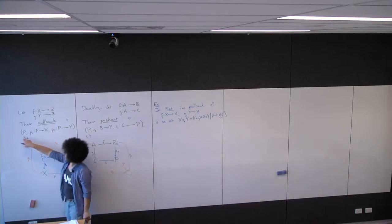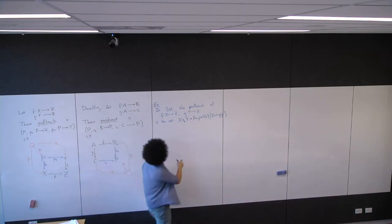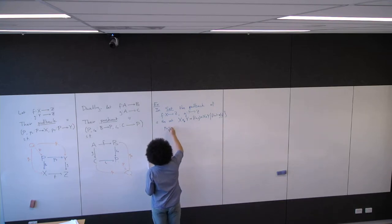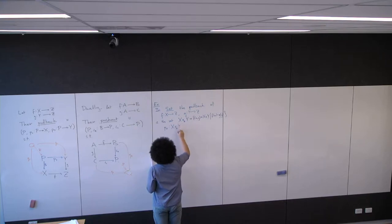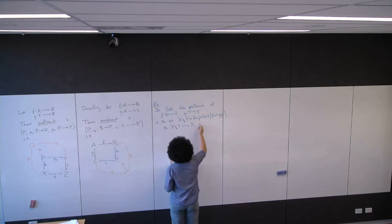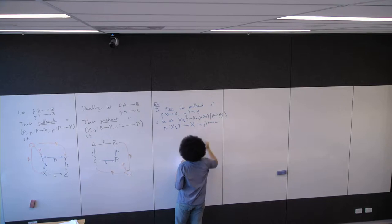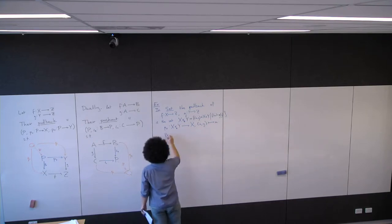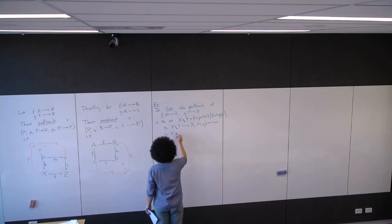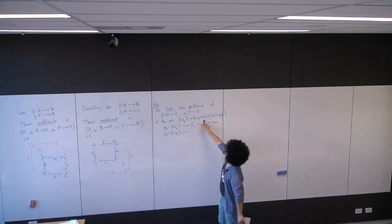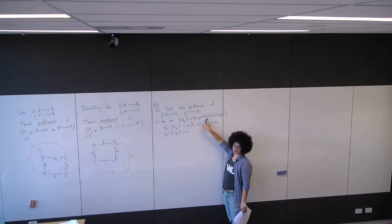I've given one of these three pieces of information; now I have to say what the other pieces are. p_X goes from the pullback to X and sends (x, y) to x. Similarly for p_Y — it's just projection onto Y.